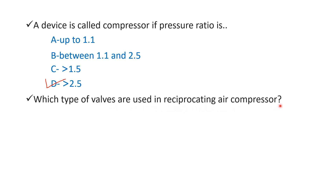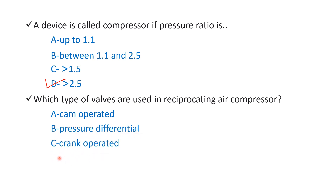Next question: which type of valves are used in a reciprocating air compressor? Option A: cam operated, Option B: pressure differential, Option C: crank operated, Option D: piston operated. The right answer is Option B — pressure differential. Pressure differential valves are used in reciprocating air compressors.